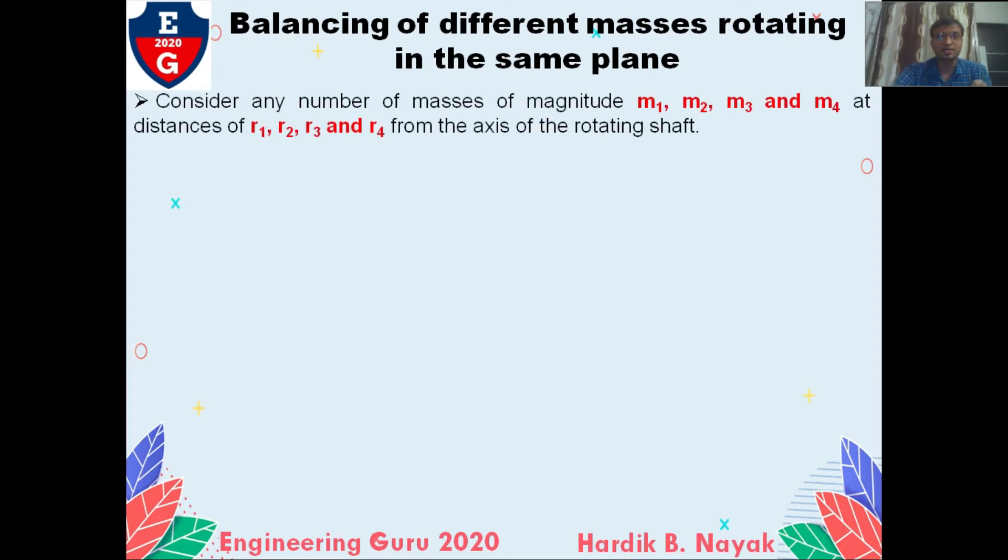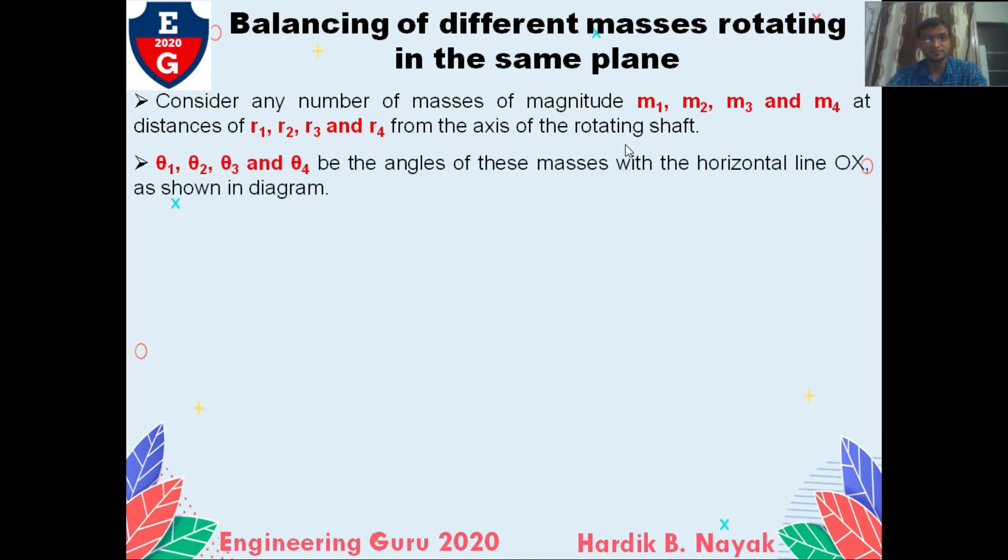Consider any number of masses M1, M2, M3, M4, so we have four masses at distances r1, r2, r3, and r4 from the axis of the rotating shaft. Here, respective angles theta 1, theta 2, theta 3, and theta 4 represent the angle of the masses with the horizontal line O-X, as already shown in the figure.